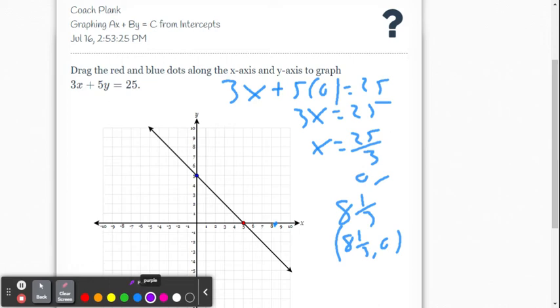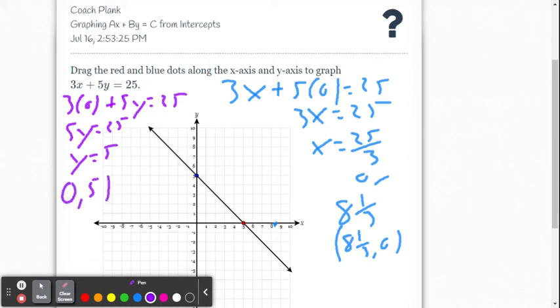So now, we've got to find the y-intercept. We're going to set x equal to 0. So it's 3 times 0 plus 5y equals 25. So then, we're going to get 5y equals 25 because 3 times 0 is 0. And then, we divide both sides by 5. So again, when x is 0, y is 5 in this case. So that's this point, (0, 5).